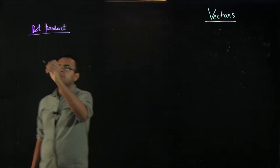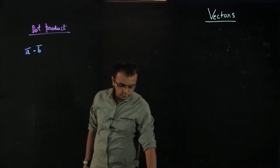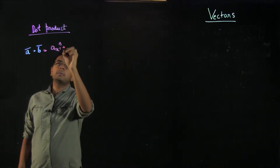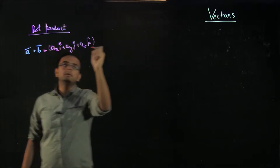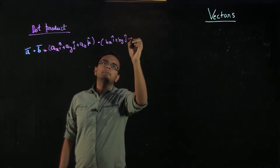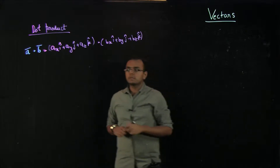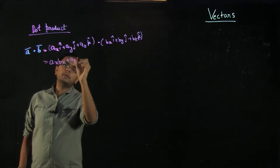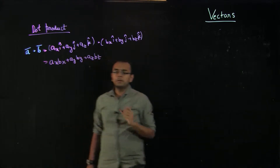Dot product is given by the convention of a dot b, where dot is the product of two vectors. And if I write a as ax i-cap plus ay j-cap plus az k-cap, and dot it with bx i-cap plus by j-cap plus bz k-cap, then the dot product gives you a scalar, and that scalar is given by ax·bx plus ay·by plus az·bz. That is what the dot product gives you.